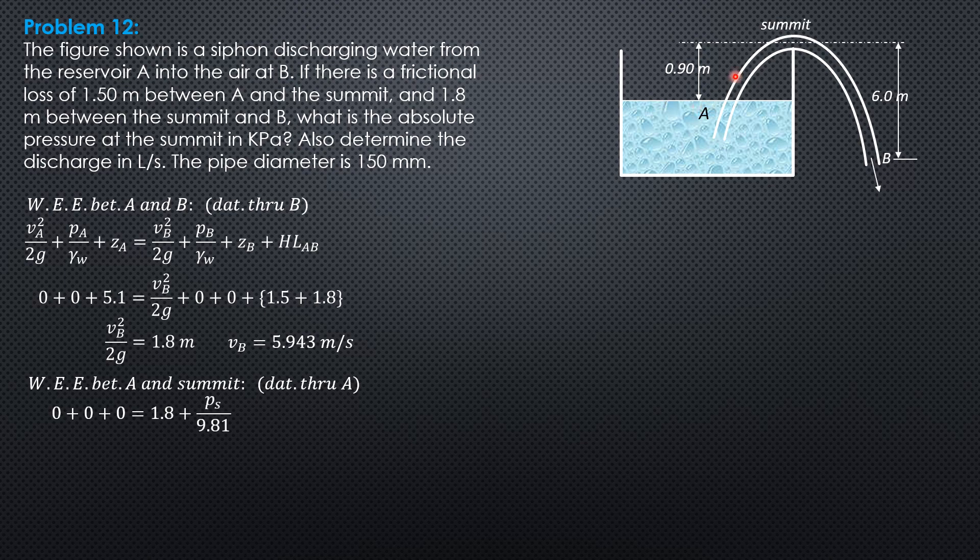equals velocity head at the summit, is equal to velocity head at B, because we have the same siphon, same diameter. So 1.8. Pressure head at the summit, unknown, then elevation head 0.9 at the summit, then the head loss is between A and the summit, 1.5.